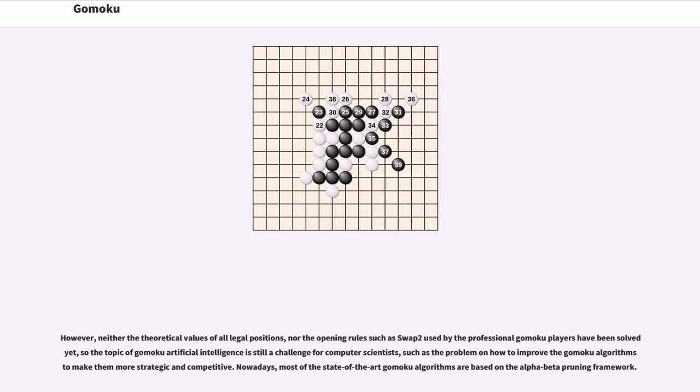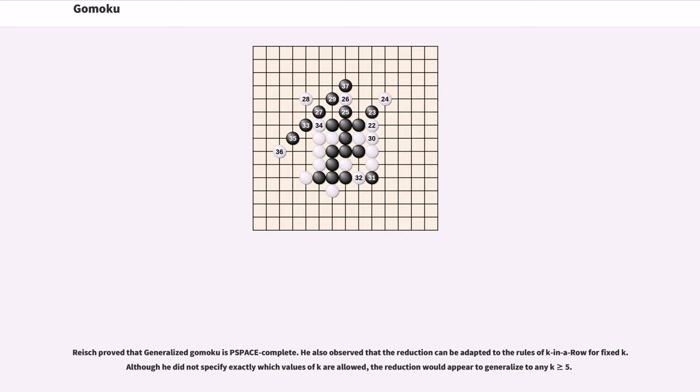Nowadays, most of the state-of-the-art Gomoku algorithms are based on the alpha-beta pruning framework. Reisch proved that generalized Gomoku is PSPACE-complete. He also observed that the reduction can be adapted to the rules of K in a row for fixed K. Although he did not specify exactly which values of K are allowed, the reduction would appear to generalize to any K greater than or equal to 5.